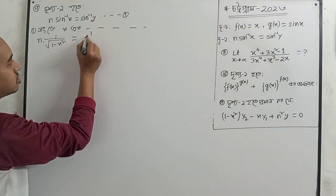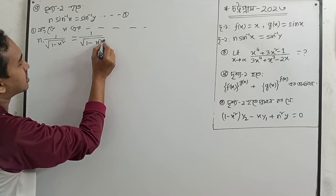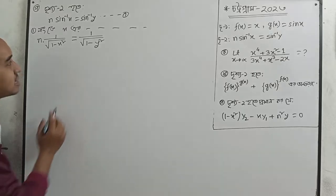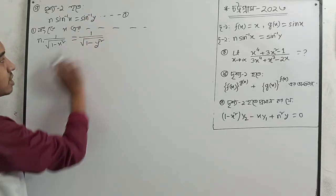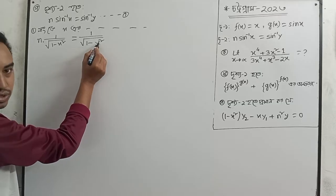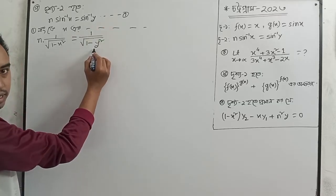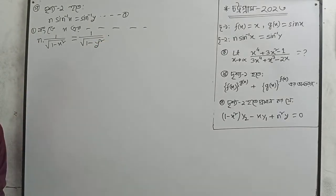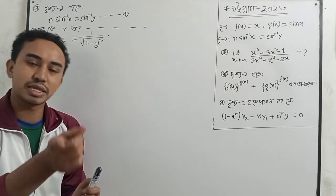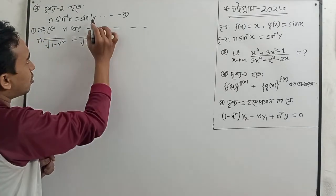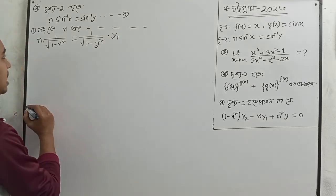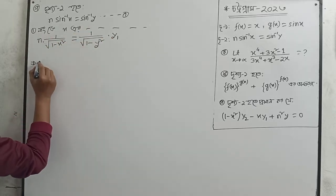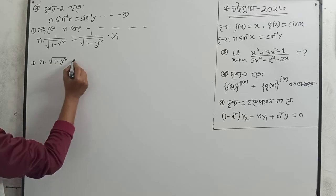The derivative of sin inverse x is 1 by root over 1 minus x squared. So y1 equals 1 over root of 1 minus x squared, which we write in terms of y. We then get 2√(1–y²) times y1 with one step.